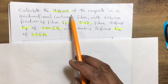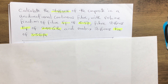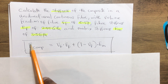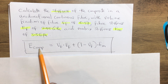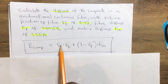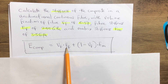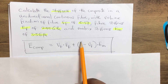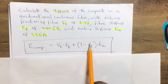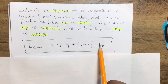There is a formula used to calculate the stiffness of a composite: E_comp, the stiffness of the composite, equals Vf — the volume fraction of the fiber — multiplied by the stiffness of the fiber Ef, plus (1 minus Vf) multiplied by Em, the stiffness of the matrix.